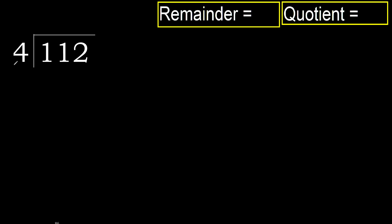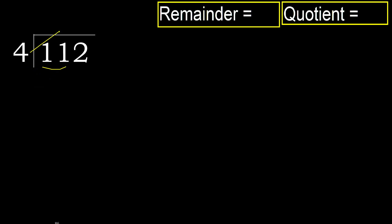112 divided by 4. 1 is less, therefore take the next digit. 11 is not less, therefore with 11: 4 multiplied by which number is nearest to 11 but not greater? 4 multiplied by 3 is 12, which is greater. 4 multiplied by 2 is 8, which is not greater. 11 minus 8 equals 3.